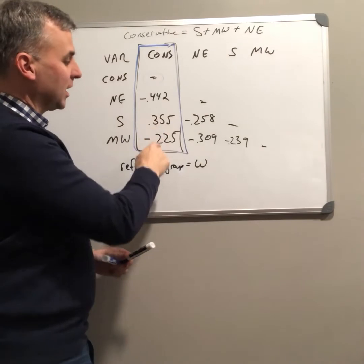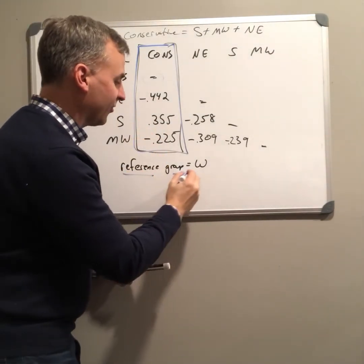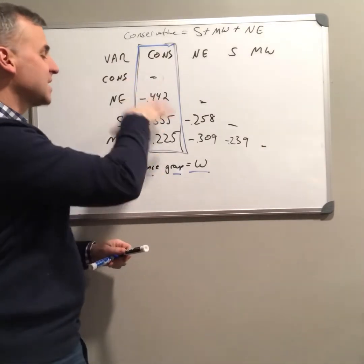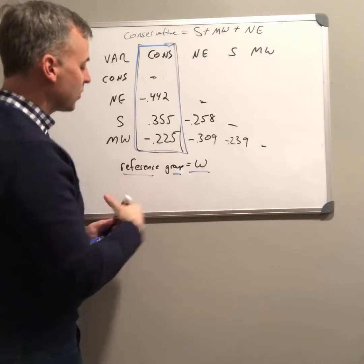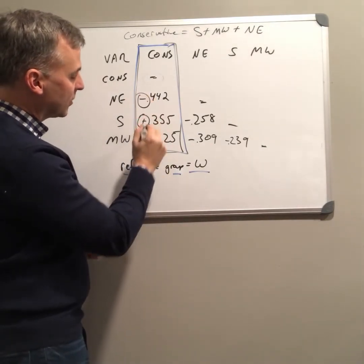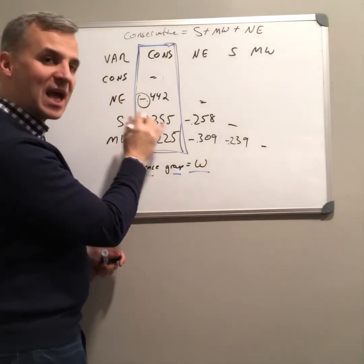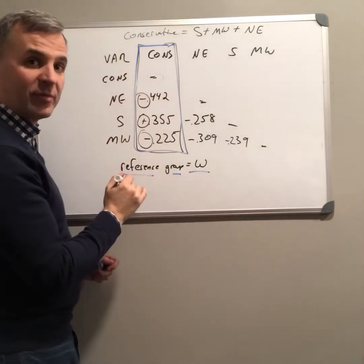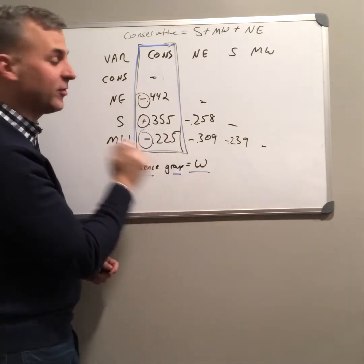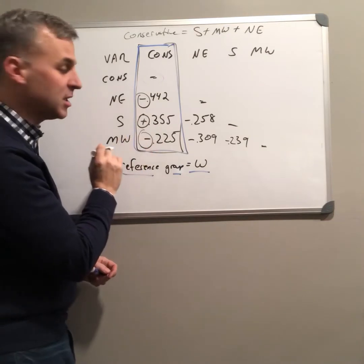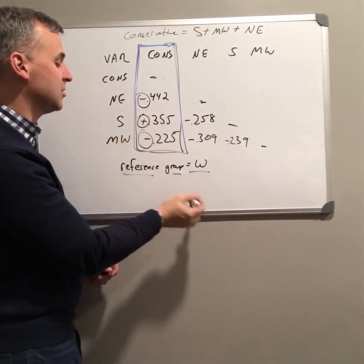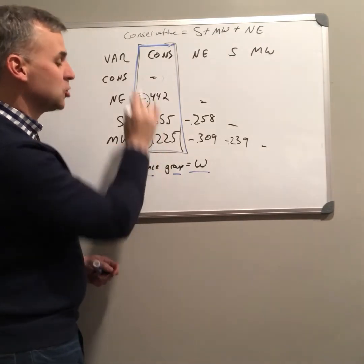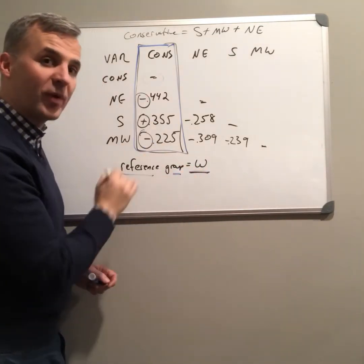Each of these correlations must be interpreted in light of the reference group — this is how each group's mean compares to the reference group. Looking at the sign: there's an implied positive sign, and Northeast and Midwest are both negative. This tells us that people from the Northeast are less likely to have conservative values than people from the West. People from the South, because I have a positive correlation here, are more likely to endorse conservative values compared to the reference group. And people from the Midwest, again negative, are less likely to endorse conservative values compared to the reference group.